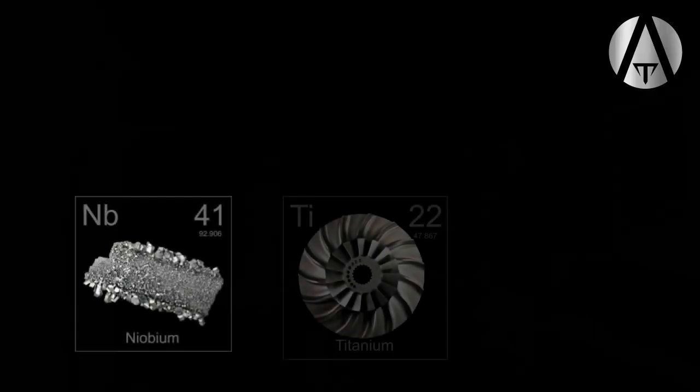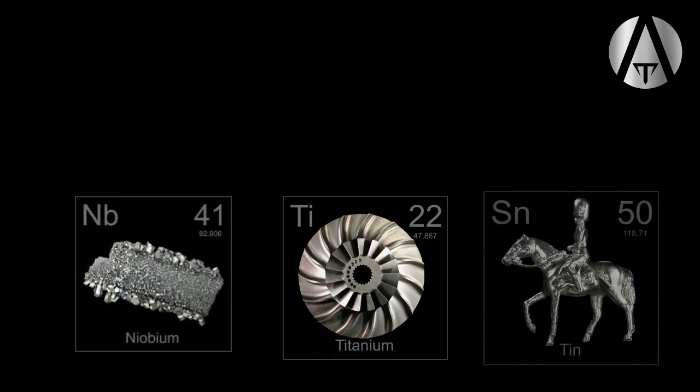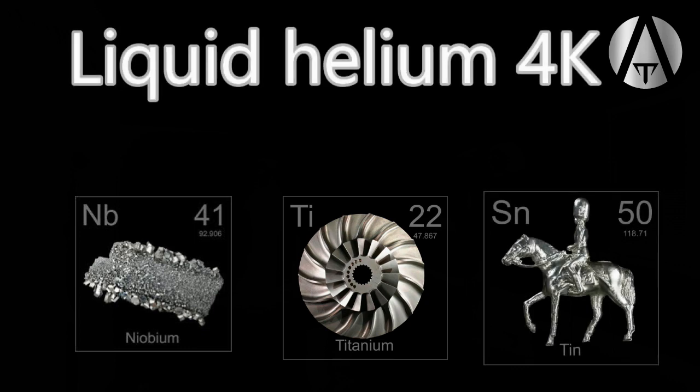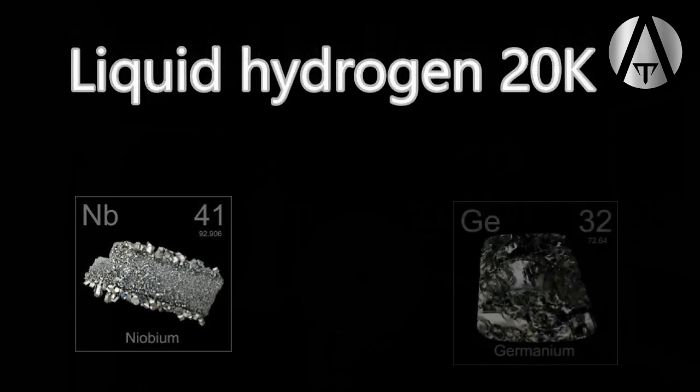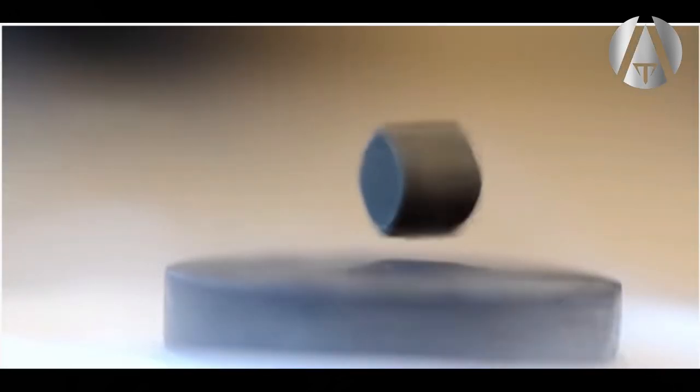Niobium titanium and niobium tin can superconduct at liquid helium temperatures. Niobium germanium can superconduct at liquid hydrogen temperatures. These are better for our current spaceships and colonies because they work under normal pressure that they do need these liquids to cool them.